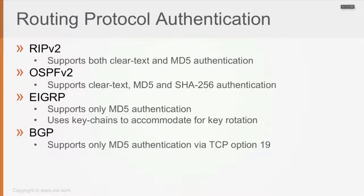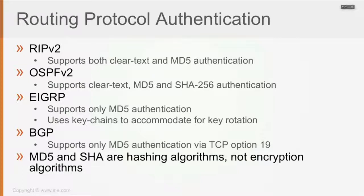BGP supports only MD5 authentication, done via TCP option 19, because BGP runs over TCP. It is the only routing protocol that runs over TCP. RIP version 2 runs over UDP, while OSPF and EIGRP have their own IP protocol numbers and run directly on top of IP.